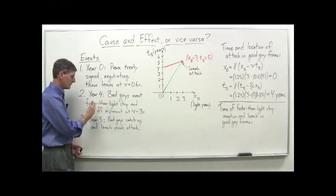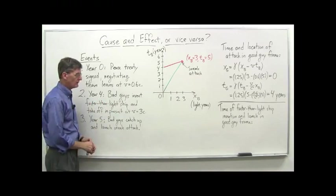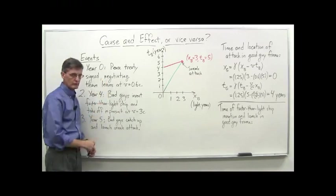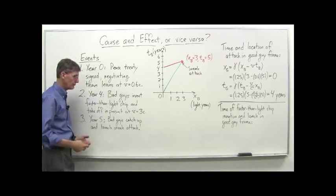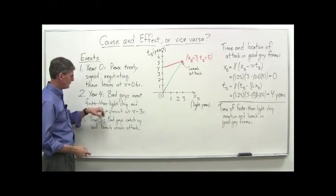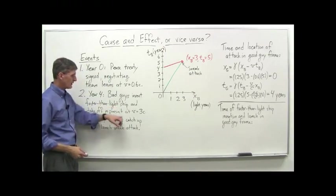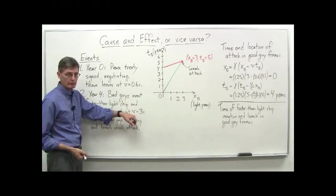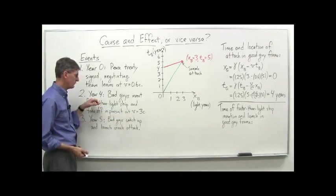They say, we're going to take off in pursuit of the good guys, our enemies, because now we have a chance to really put it to them. And so they use their faster-than-light ship and take off at a velocity of three times the speed of light, and that happens in year four.